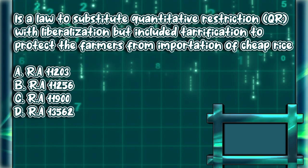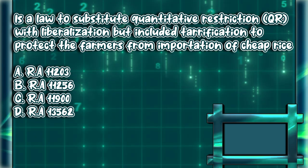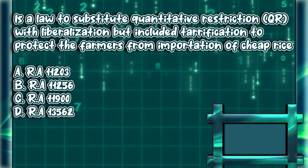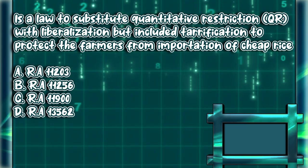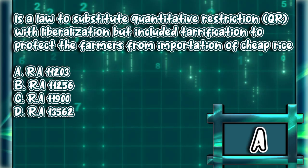This is a law to substitute quantitative restriction with liberalization, but included tarification to protect farmers from importation of cheap rice. a) RA 11203, b) RA 11256, c) RA 11900, d) RA 13562. The answer is letter A.